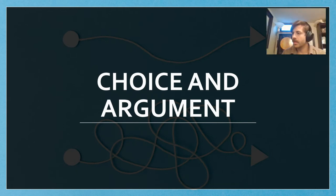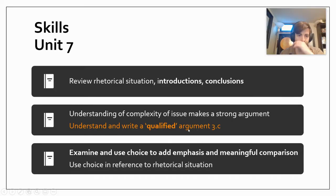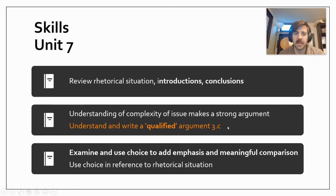Hi folks, here today with another video in choice and argument, our seventh unit in AP Language, specifically looking at what rhetorical choices an author can make to create a stronger and more complex argument. Today we're going to take a look at this idea of a qualified argument and complexity in arguments. This is skill 3c — we're looking at complexity and qualification of an argument.